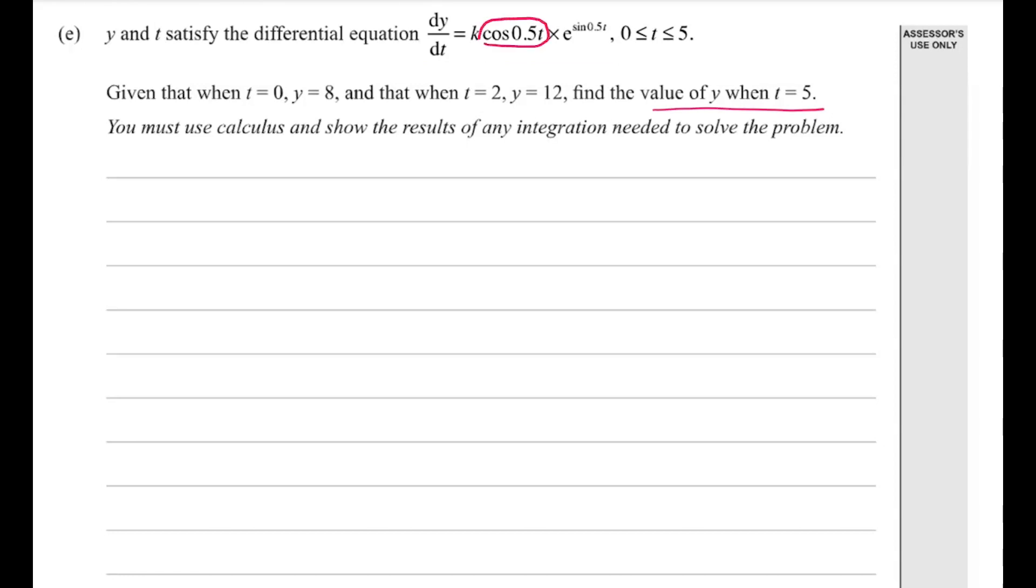So it's a bit of a reverse chain rule happening again. So y equals, or rather, if y equals e to the sine 0.5t, what would that give us? If we differentiated that, we would end up with e to the sine 0.5t multiplied by the derivative of sine 0.5t, which would be half cos 0.5t.